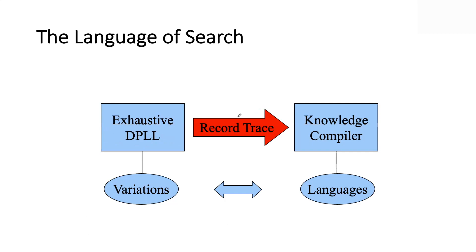If you run DPLL to exhaustion and keep a trace, you end up with a knowledge compiler. The fascinating part is: depending on which variation of exhaustive DPLL you use, you end up getting a different circuit type, referred to as languages. These variations existed before — people using exhaustive DPLL for model counting were trying different things — and it turns out they lead to different circuit types when you keep the trace.